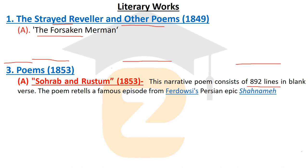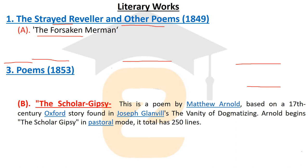Sohrab and Rustam is taken from Firdausi's Persian epic Shahnameh. Firdausi was a Persian poet and the Shahnameh is a very famous Persian epic. The poem details a famous episode in which Rustam is a great warrior and Sohrab is his son — these two warriors fight against each other, which is the story Arnold adapts.